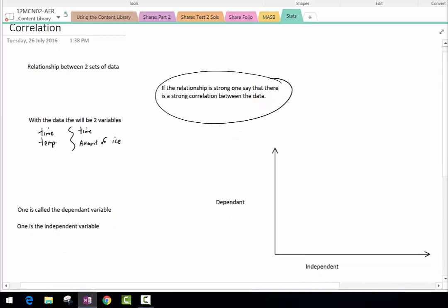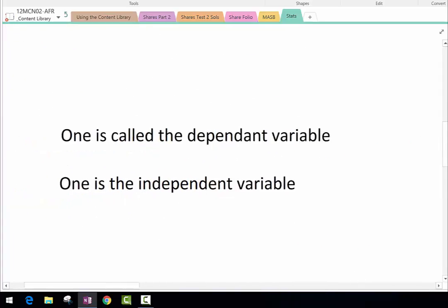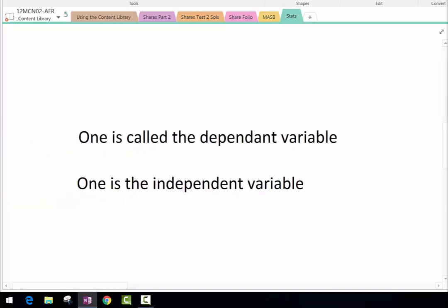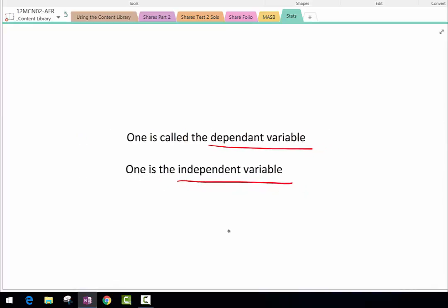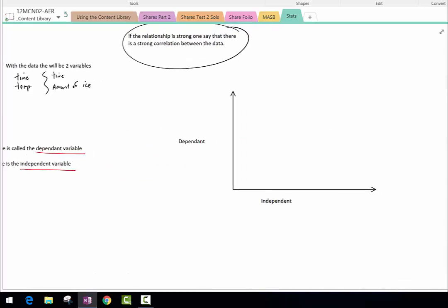Then what we can do is graph it. To graph it, we need to know the two types of variables we have. We have one which we refer to as the dependent variable and one is the independent variable. The dependent variable is dependent on the other one, the independent that doesn't matter. Let's think back to our one about the oven. The independent variable in that one would be time because time just keeps on going, and the dependent variable would be the temperature.